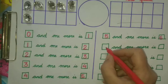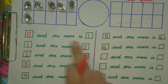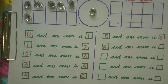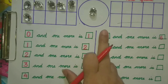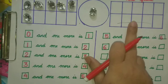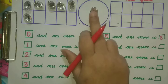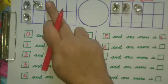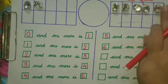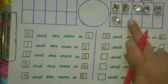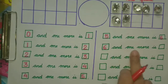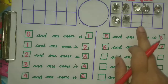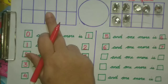Our next question is 6. 6 and 1 more — so 6 and 1 more is equal to how many? To find out, we will bring them together to the ten frame. Let's count: 1, 2, 3, 4, 5, 6, 7. So 6 and 1 more is 7.